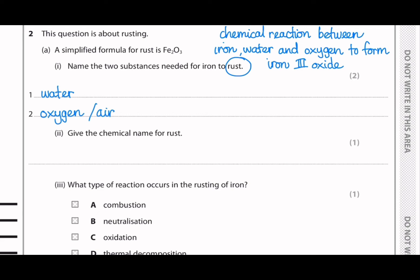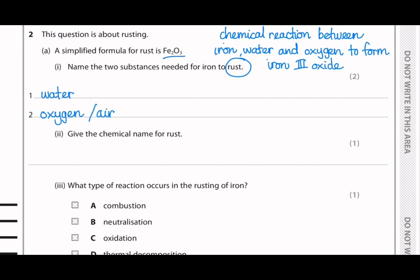And then the second part asks to give the chemical name for rust. And here in the same definition, we can see that it's Fe2O3. So that means you can write iron 3 oxide. But you could also write hydrated iron oxide because there is water.